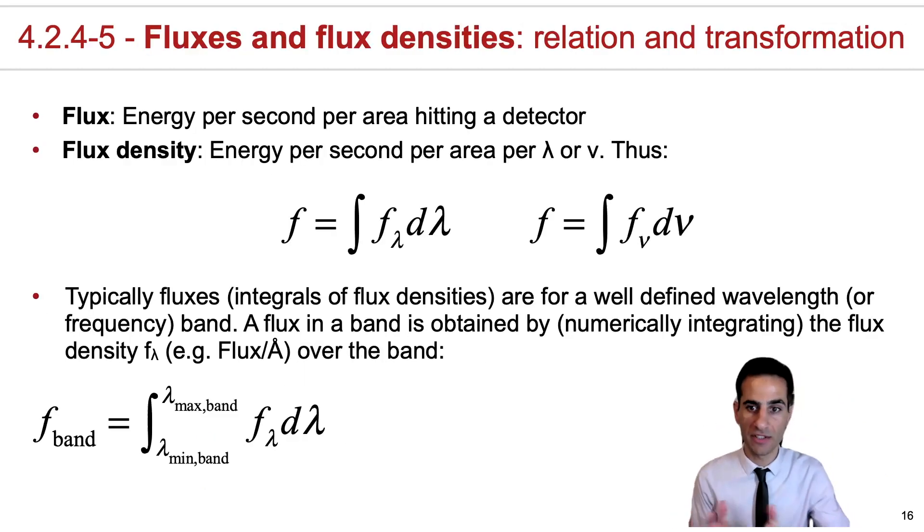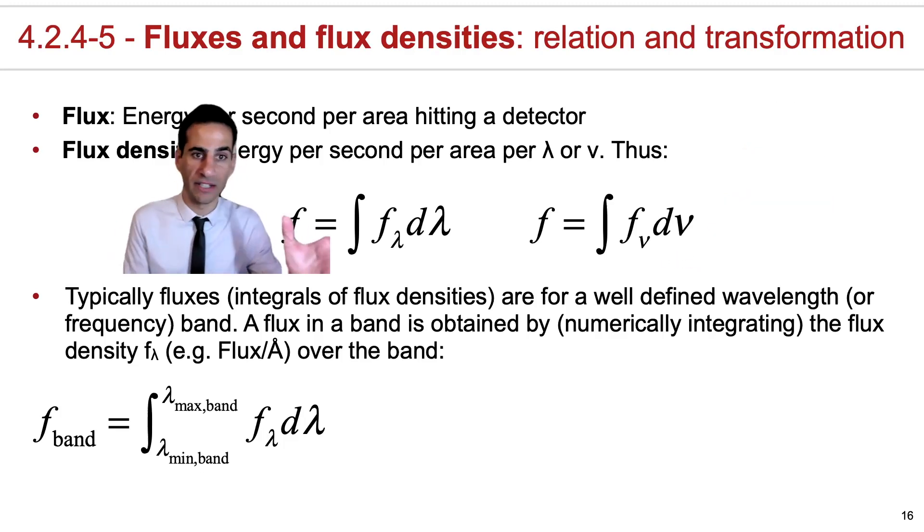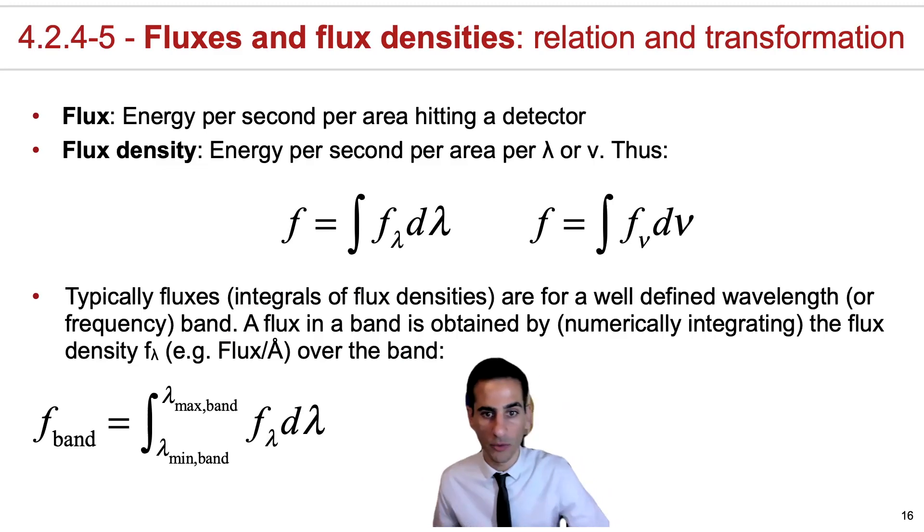I mentioned this already, but there is an important relation between flux, which is the energy per second per area hitting a detector, and flux density, which is energy per second per area per wavelength or frequency. So the way that you can calculate a flux if you have a spectrum of a source that's given in f nu is actually by integrating the spectrum over a given wavelength.